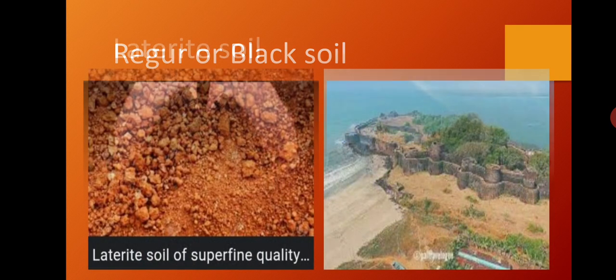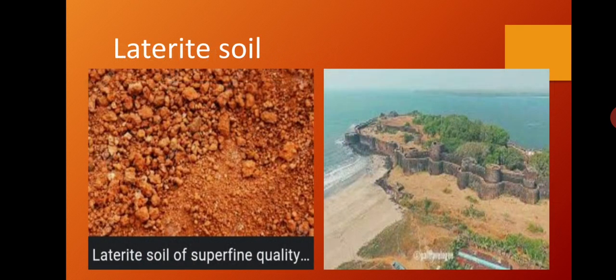The third type is laterite soil. It is found in the coastal belt of Konkan to the west of the Sahyadris and in the east of Vidarbha. In areas of very heavy rainfall, the eroded rock gets washed away in large quantity. As a result, the parent rock lies bare and open. The iron in the rock reacts with the oxygen in the air, causing a chemical reaction that gives the soil a reddish-orange color.